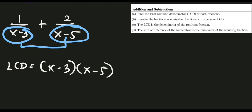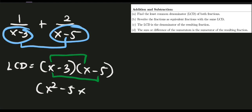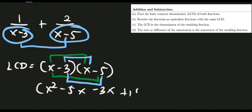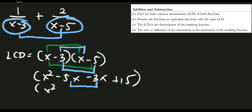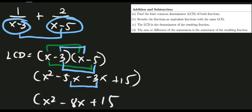We can simplify the LCD by expanding using the FOIL method. x times x gives x squared; x times negative 5 gives minus 5x; negative 3 times x gives minus 3x; and negative 3 times negative 5 gives positive 15. Combining like terms, negative 5x and negative 3x give negative 8x. So our LCD is x squared minus 8x plus 15.